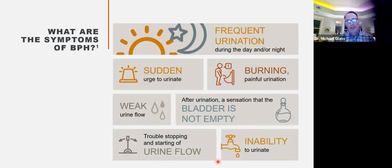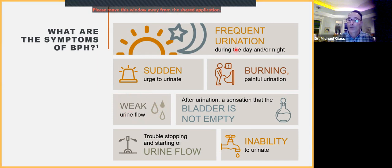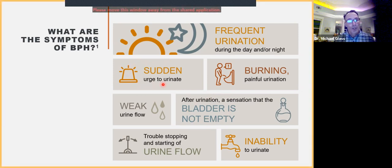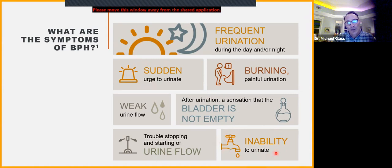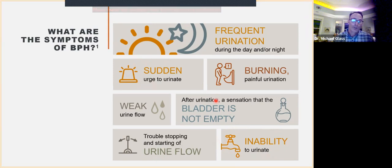The most important symptom that affects most men is the weak stream, because the prostate is squeezing that channel. A weak stream can lead to more frequent urination because you're not fully emptying the bladder. You can get a sudden urge to urinate because the prostate can push into the bladder, causing irritation. Burning can happen, trouble starting the urine, and the one we want to avoid: inability to urinate — where suddenly you can't go and need to go to the hospital for a catheter. That's why these symptoms are very important to work through.